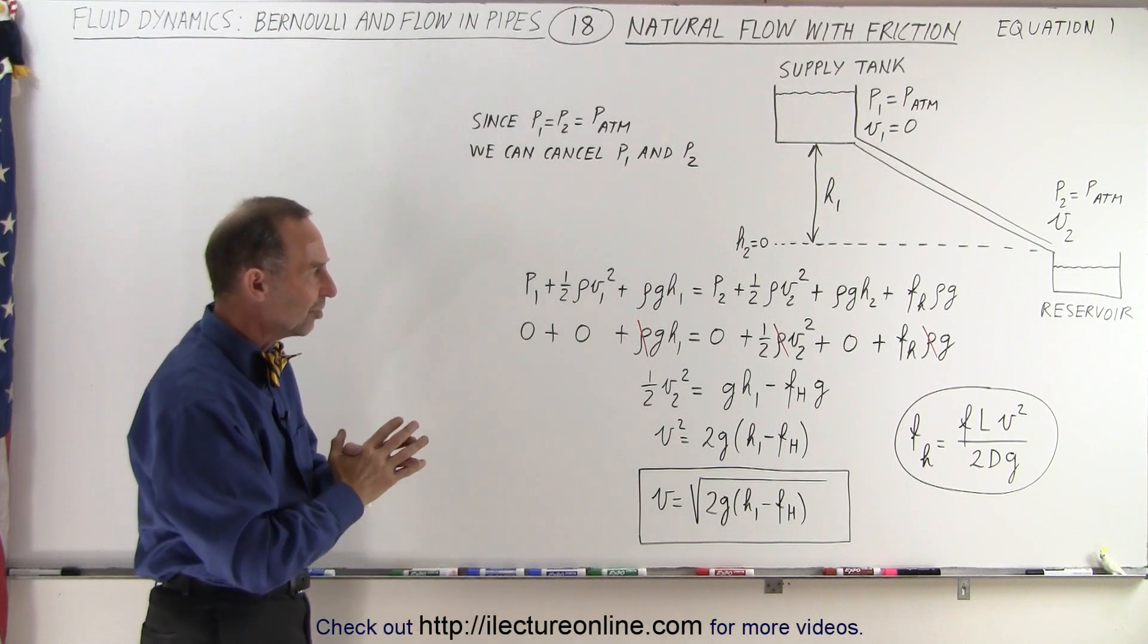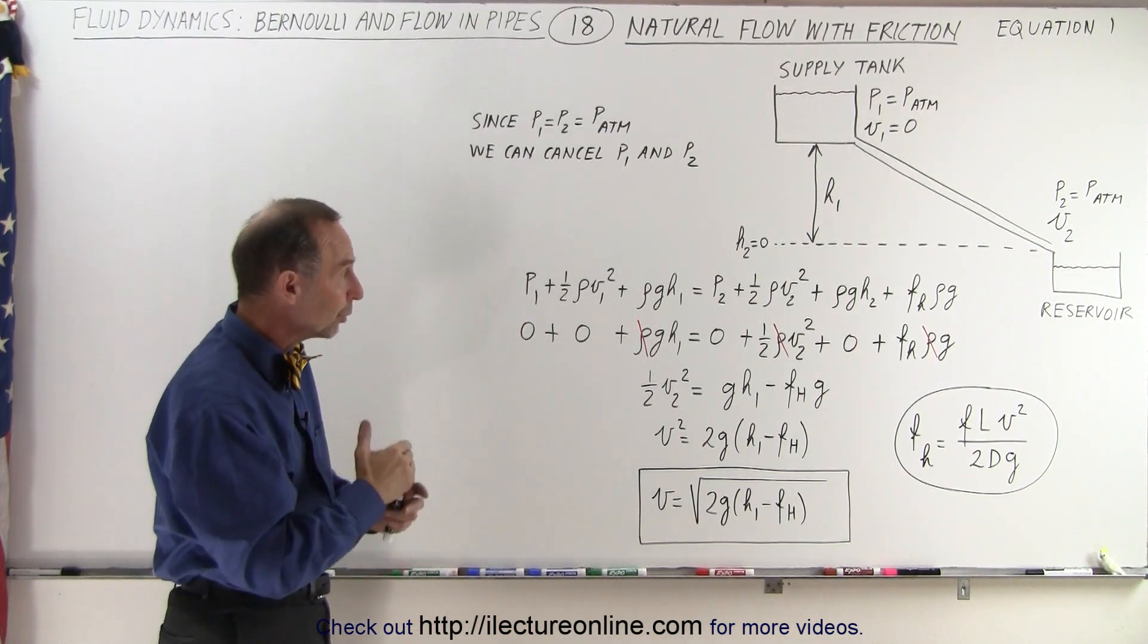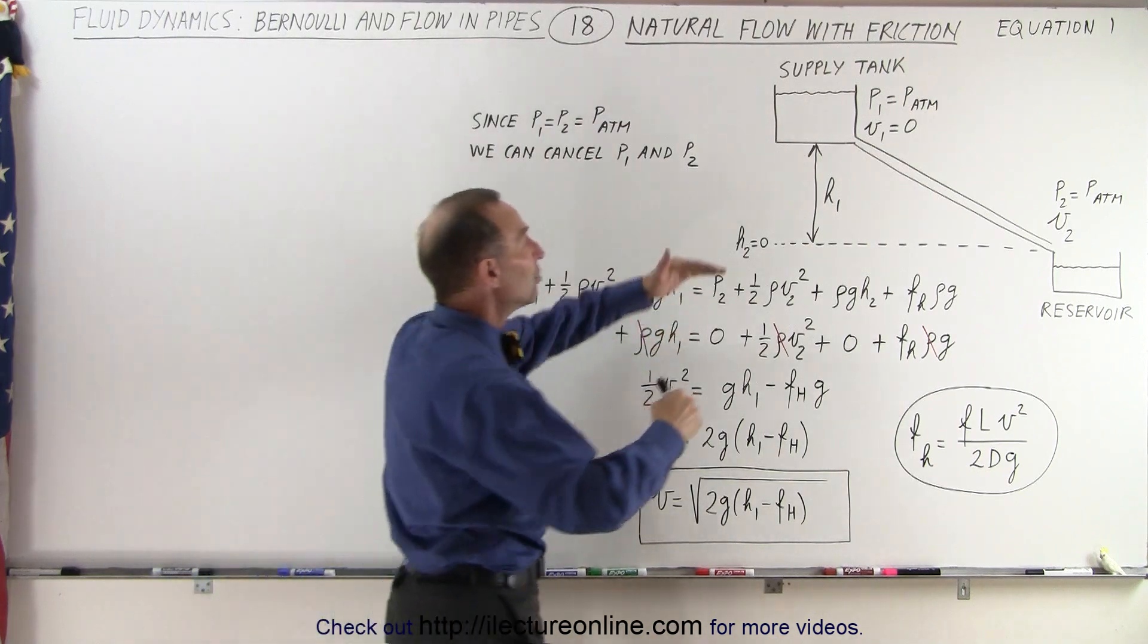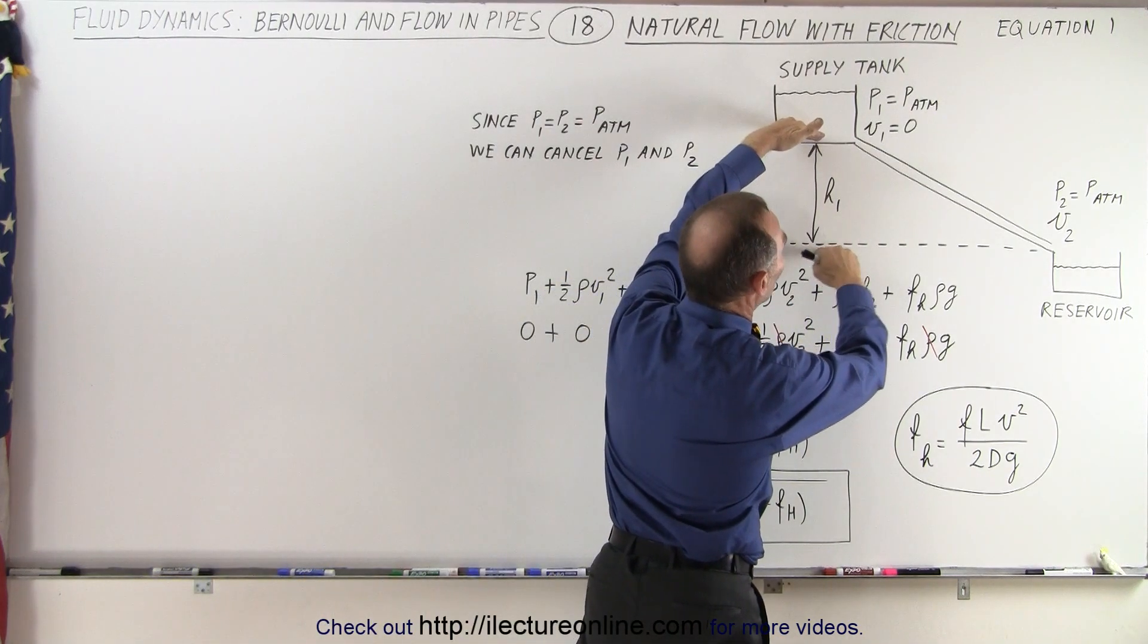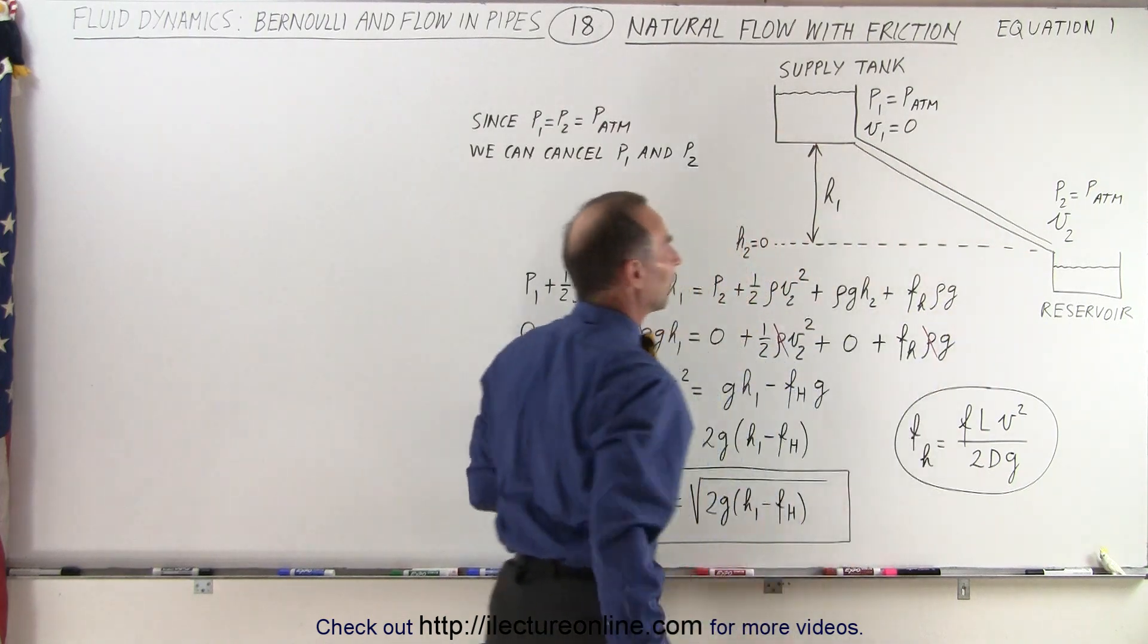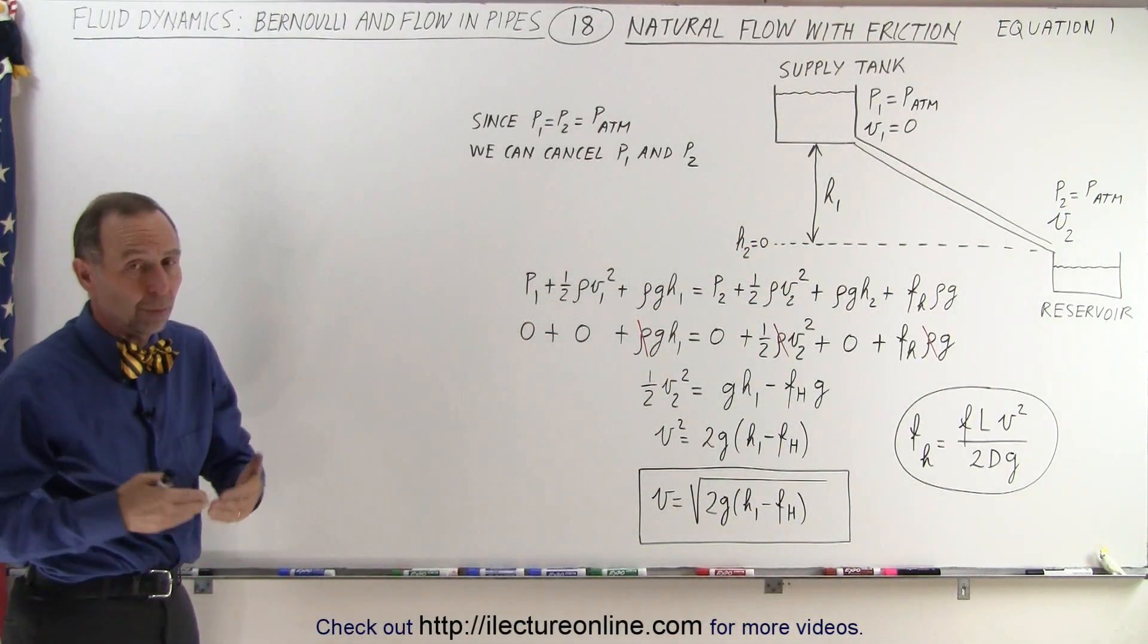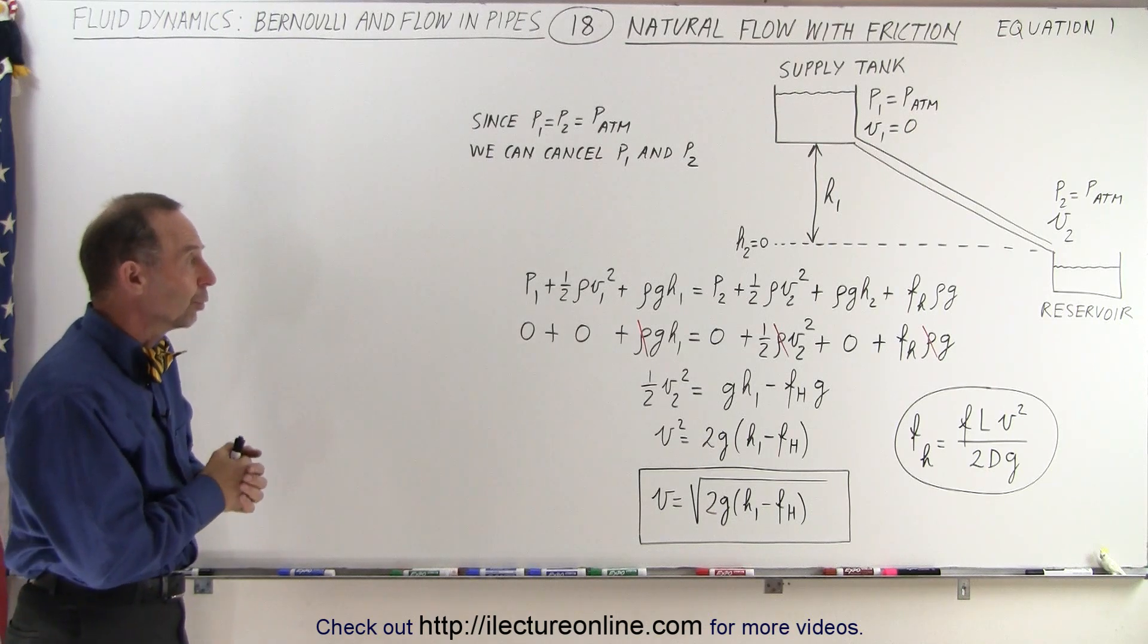Well, normally if friction is not taken into account, we know that the velocity will be the square root of 2gh, where h is the difference in height from where the source is to where the ultimate reservoir is. So simply, it would be the square root of 2gh is what we would normally get out of Bernoulli's equation.